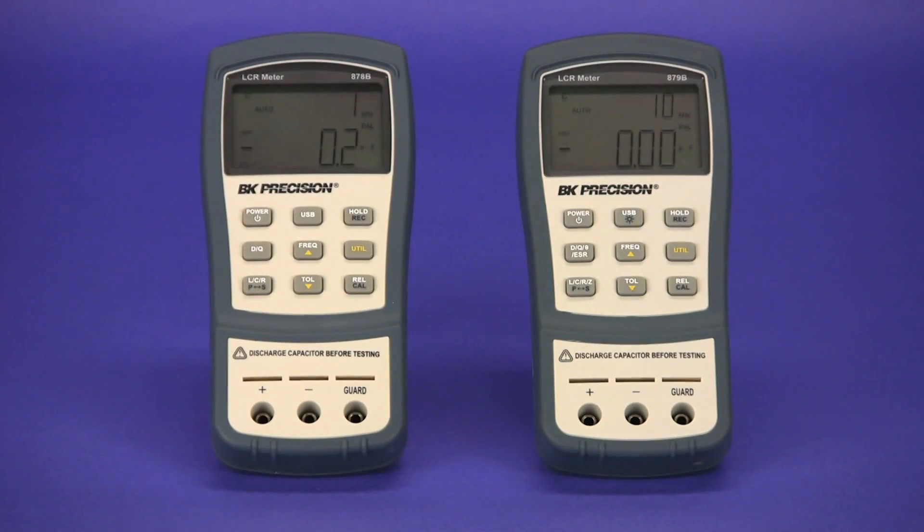Here are the models 878B and 879B. Both are dual display handheld LCR meters, capable of measuring multiple parameters of capacitors, inductors, and resistors.